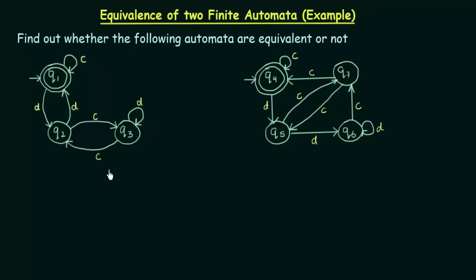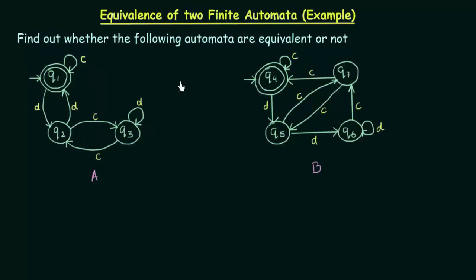Here we have two automata given. Let me call them A and B. Our task is to find out whether these two automata are equivalent or not. In automaton A, Q1 is the initial state as well as the final state. And in automaton B, Q4 is the initial state as well as the final state. So this satisfies one of our conditions.